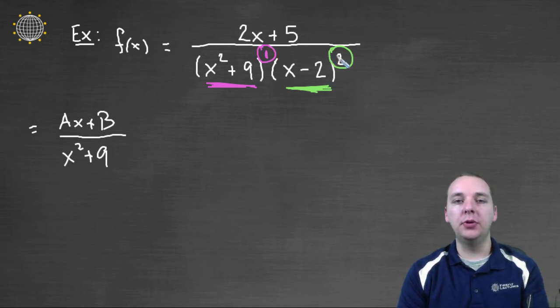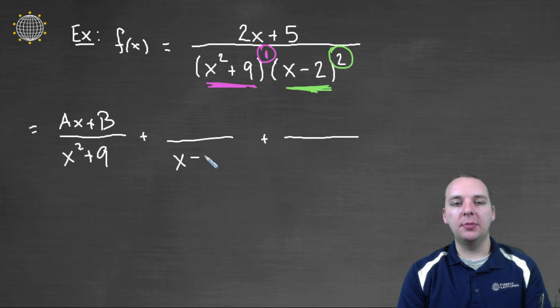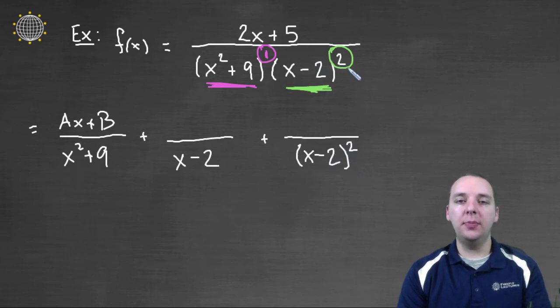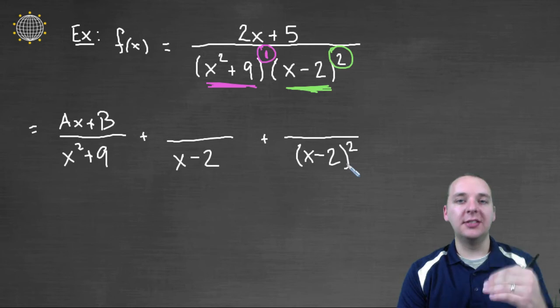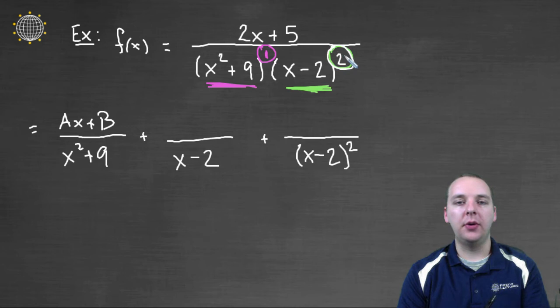He will contribute two terms. So we'll have one term here, and then another term here. Now what are the denominators? Well again, that has something to do with that power as well. This would be x minus two, and the next term's denominator would be x minus two squared, right? And if it was to the third power, you'd have x minus two to the third. So whatever this power is, these powers in these denominators successively work their way higher and higher until you match whatever power you have listed here.